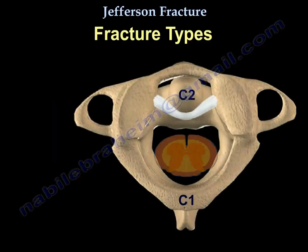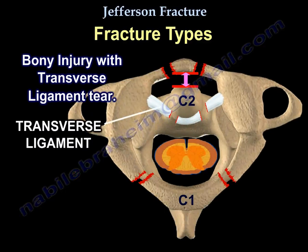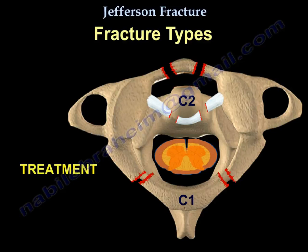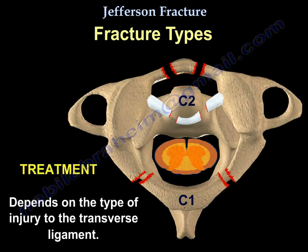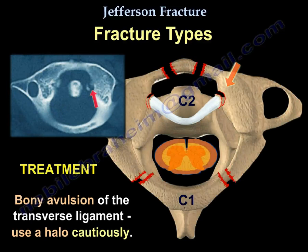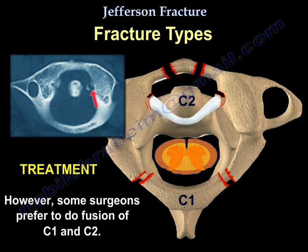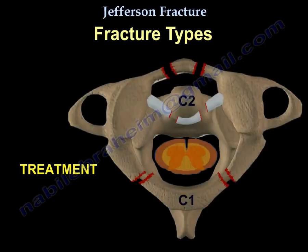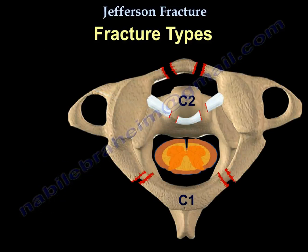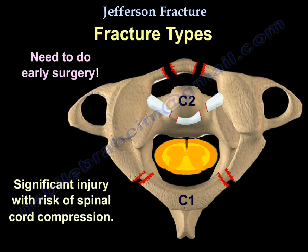In the second type, there is a bony injury of C1 with a transverse ligament tear. The ADI will be more than 3 mm in adults. Treatment depends on the type of transverse ligament injury: with bony avulsions, you can use a halo cautiously, though some surgeons prefer C1-C2 fusion. If there is an inter-substance tear of the transverse ligament, C1-C2 fusion is indicated, and early surgery is needed due to significant risk of spinal cord compression.